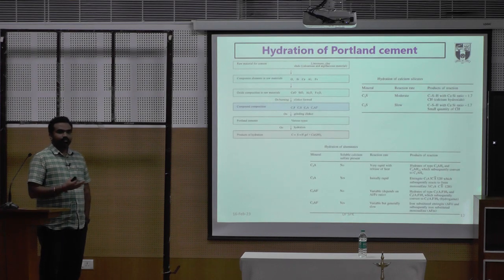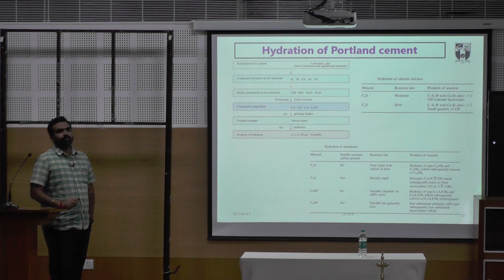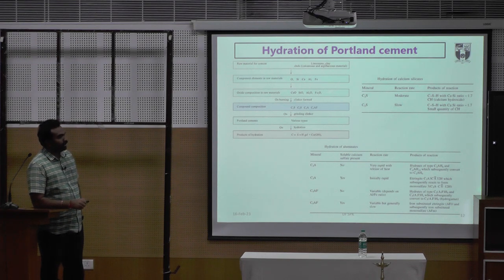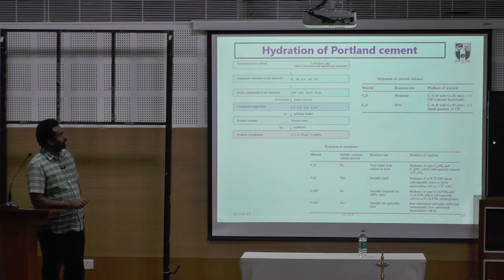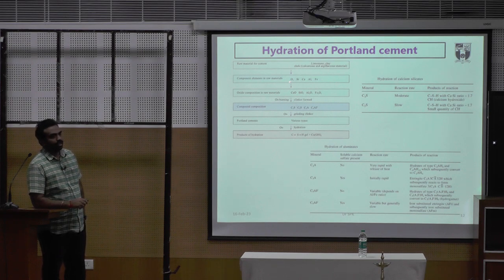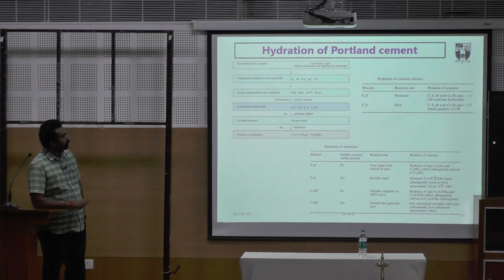The very important topic is cement chemistry, which deals with two things: the oxides present in the cement and the compound compositions. For example, if you have a raw material, you will be able to identify the component elements — O₂, Si, Ca, Al, and Fe — and the oxides are CaO, SiO₂, and Al₂O₃. In general, when we start doing research activities, we use XRF analysis to get the oxide data, and from that we carry out compound analysis.